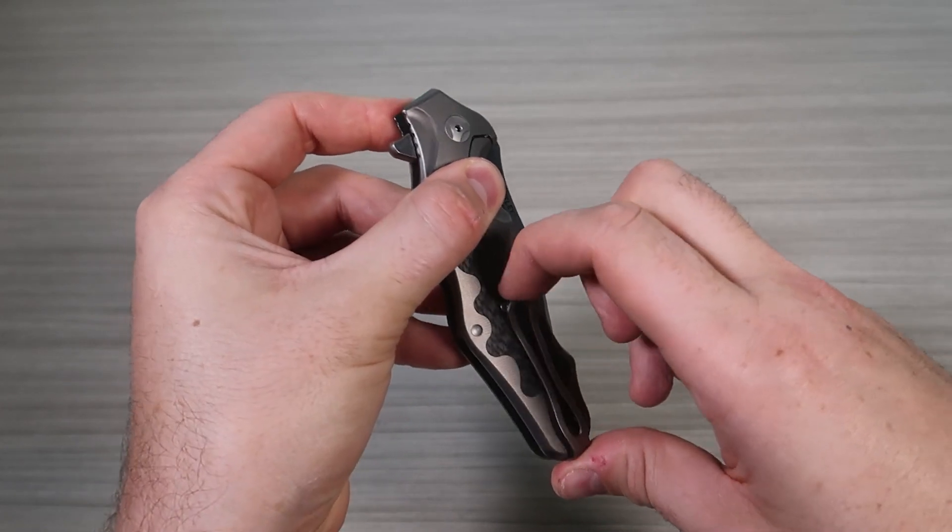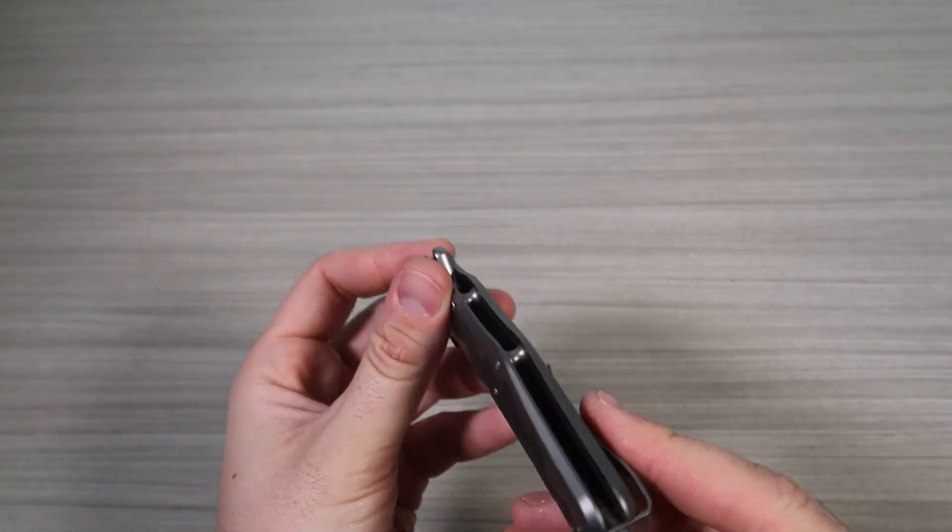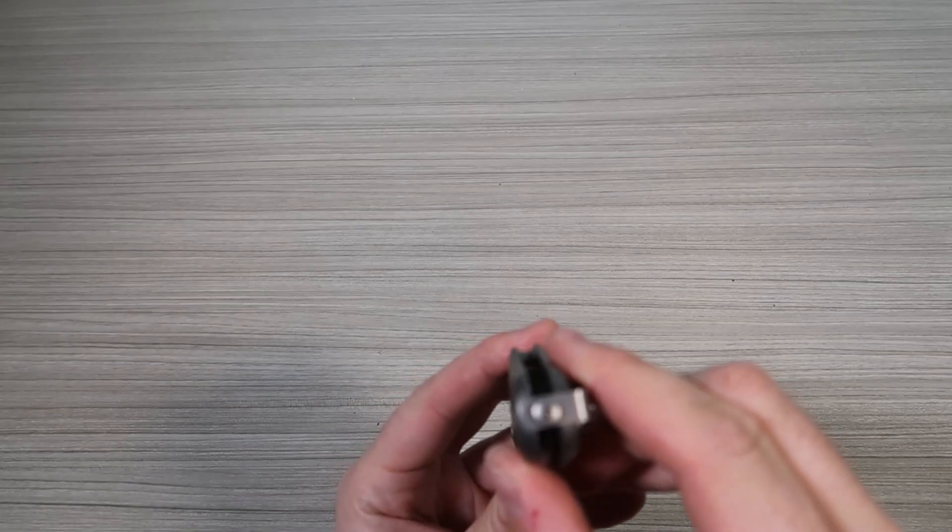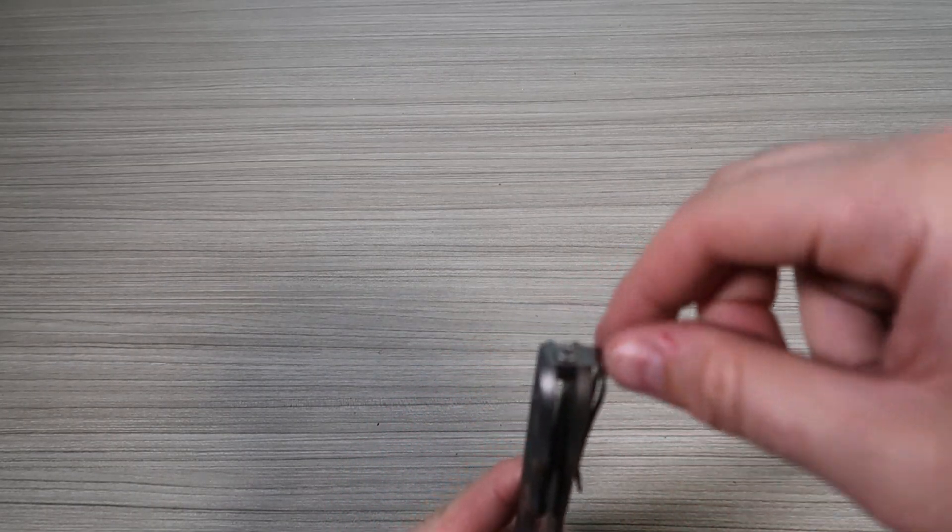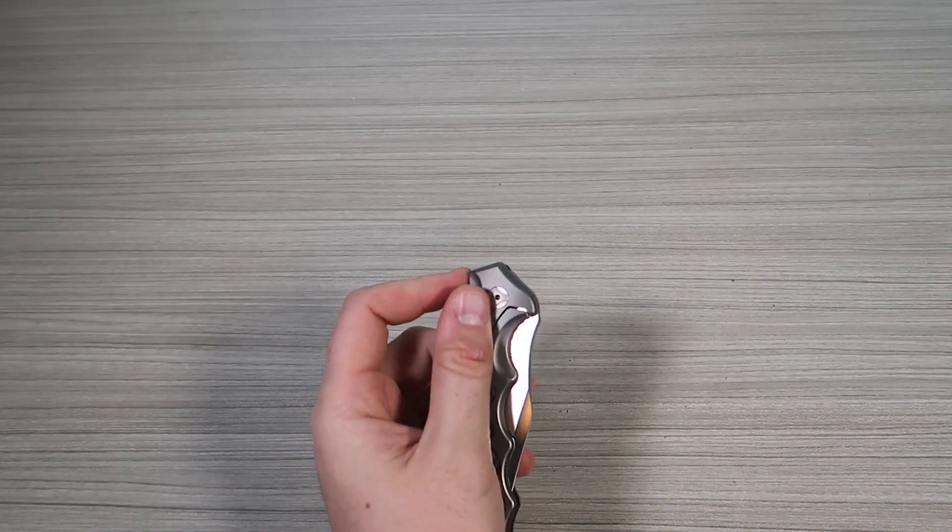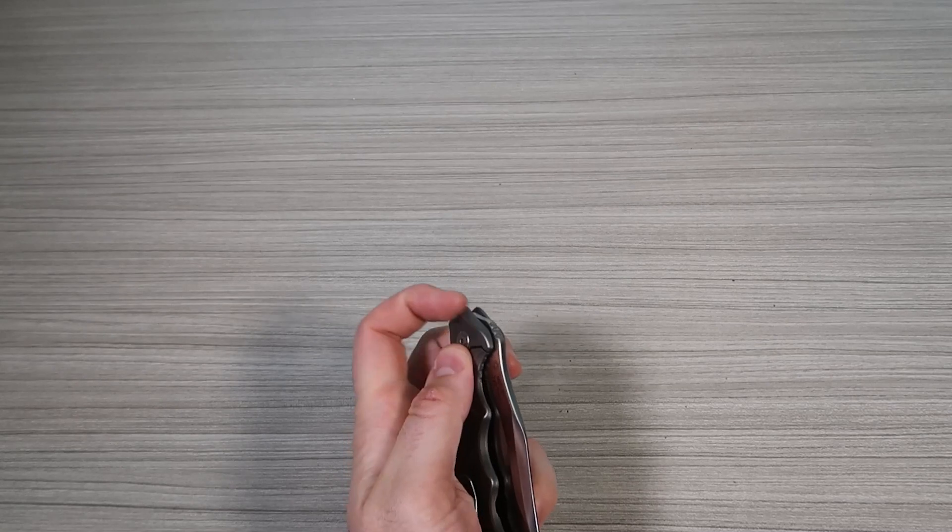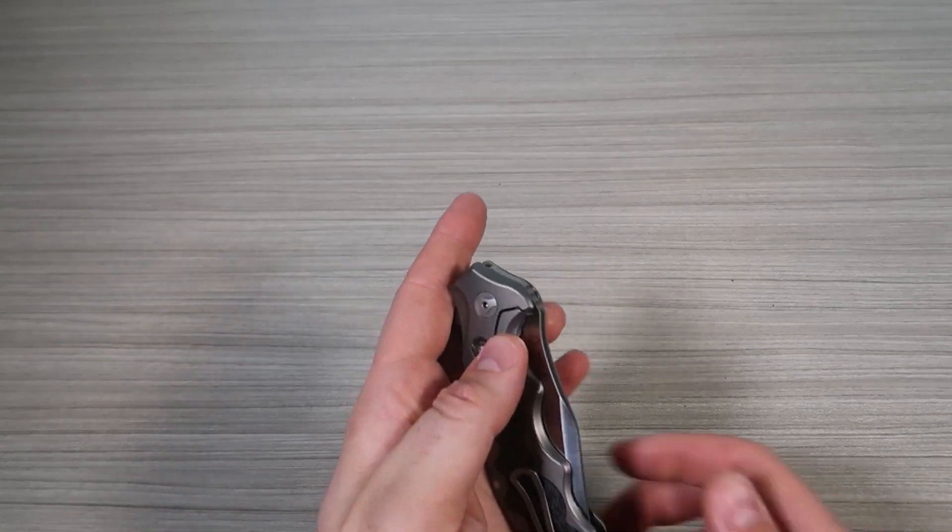So yeah, there's a clip. Very soft pocket clip. I like that. And looks like this is reversible. So you take off this screw and put it on the other side if you wish to. And looks like you can close it and open it with the left hand. No problem.